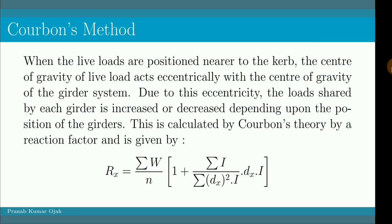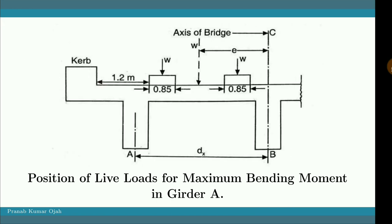Now regarding the application of Corbain's method: when live loads are positioned nearer to the curb, the center of gravity of the live load acts eccentrically with the center of gravity of the girder system. Due to this eccentricity, the load shared by each girder is increased or decreased depending upon the position of the girders. This is calculated by Corbain's theory using its formula.